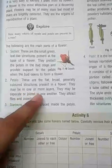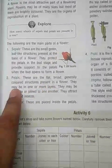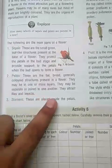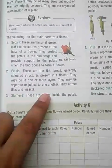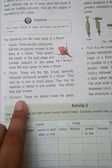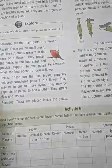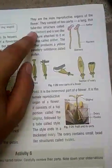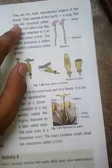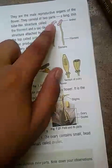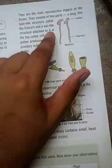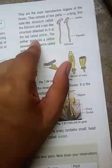Petals may be in one or more layers. They may be separate or joined to one another. They attract flies and insects. Next are stamens. Stamens are placed inside the petals and are the male reproductive organs of the flower. They consist of two parts: a long thin tube-like structure called the filament, and a sac-like structure at the top called the anther.